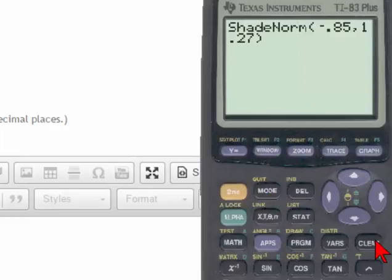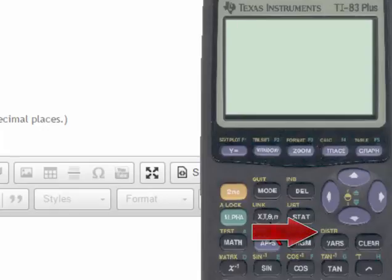Now going back to the home screen and clearing the home screen, I'll show you how to do this problem so that you simply get the answer without any drawing. To do that, we're going to go to the distribution button again.